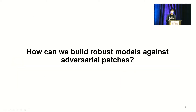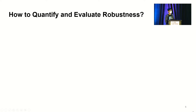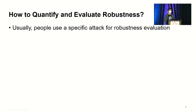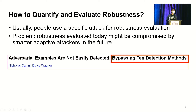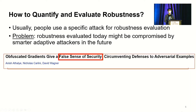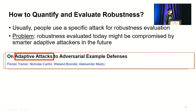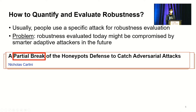This attack imposes a threat to machine learning applications interacting with the physical world. Our research question is: how can we build robust models against adversarial patches? As a first step, we want to understand how to quantify and evaluate robustness. Usually people use a specific attack for robustness evaluation. However, the problem is that robustness evaluated this way might be compromised by a smarter adaptive attack in the future — we have seen many defenses broken just a few months after publication.